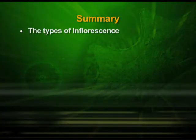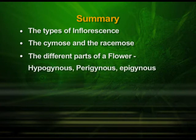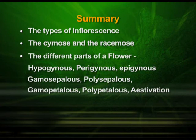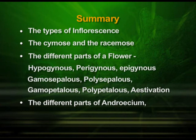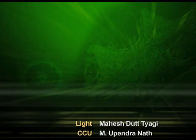In this episode, we discussed the types of inflorescence — cymose and racemose — the different parts of a flower, hypogynous, perigynous and epigynous flowers, gamosepalous, polysepalous, gamopetalous, polypetalous, aestivation and the different parts of androecium, gynoecium and placentation. We will be dealing with the other portion of morphology of flowering plants in the next episode. Thank you.